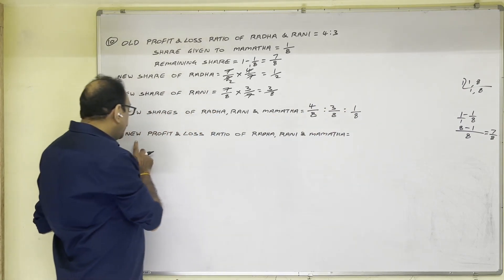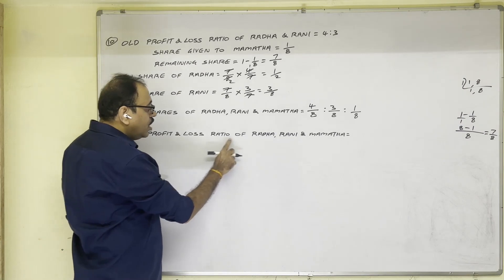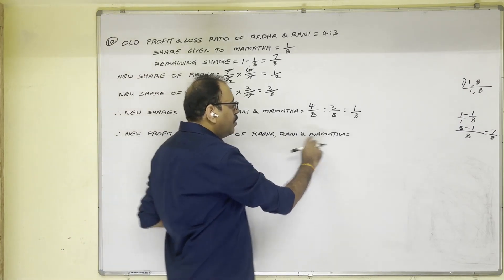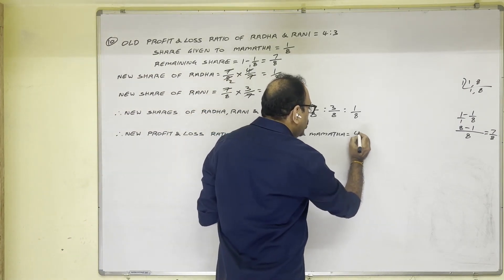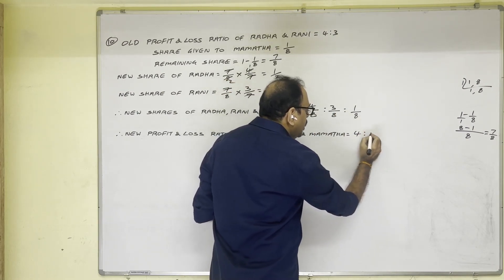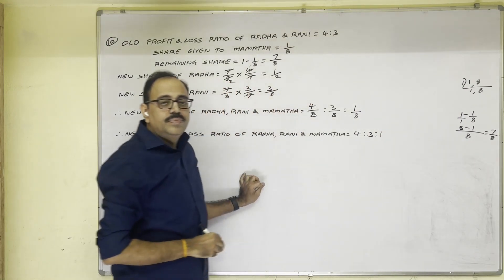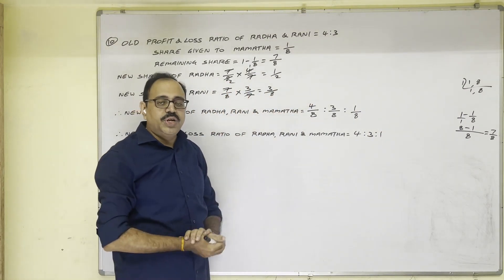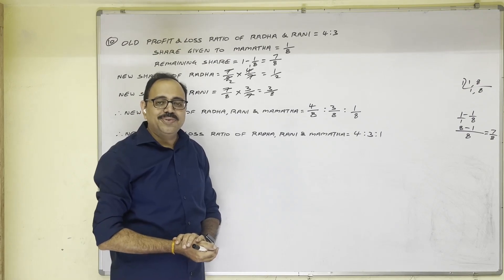So finally how to write this new profit and loss ratio of Radha, Rani, and Mamata is required. Take numerators: 4 is to 3 is to 1. So this is the end of present video. Hope this video is helpful to you. Thank you.